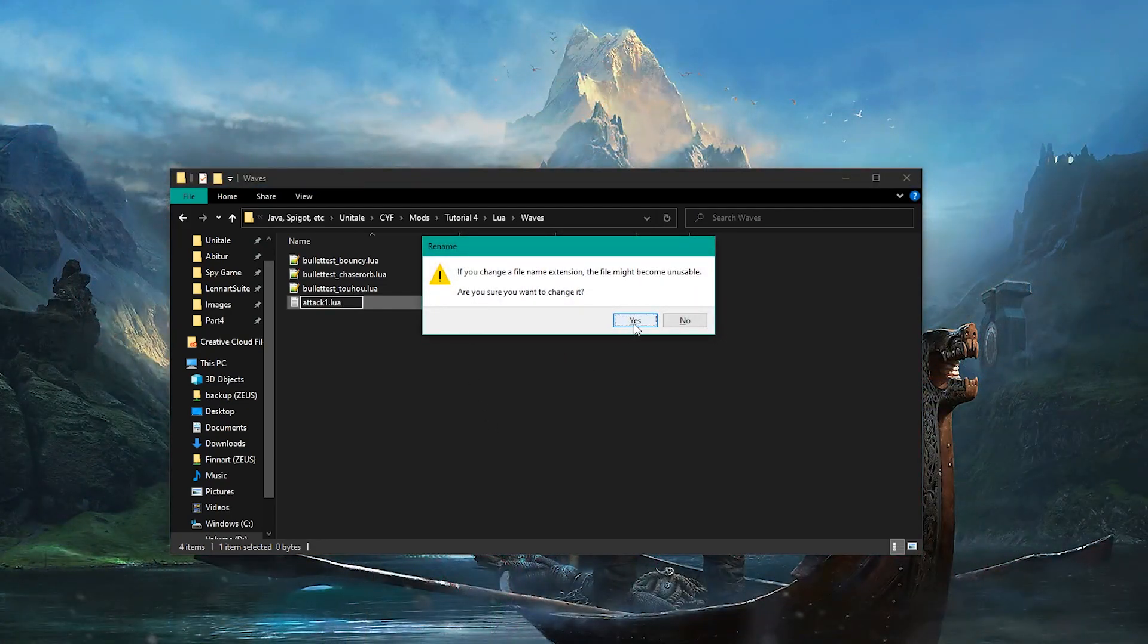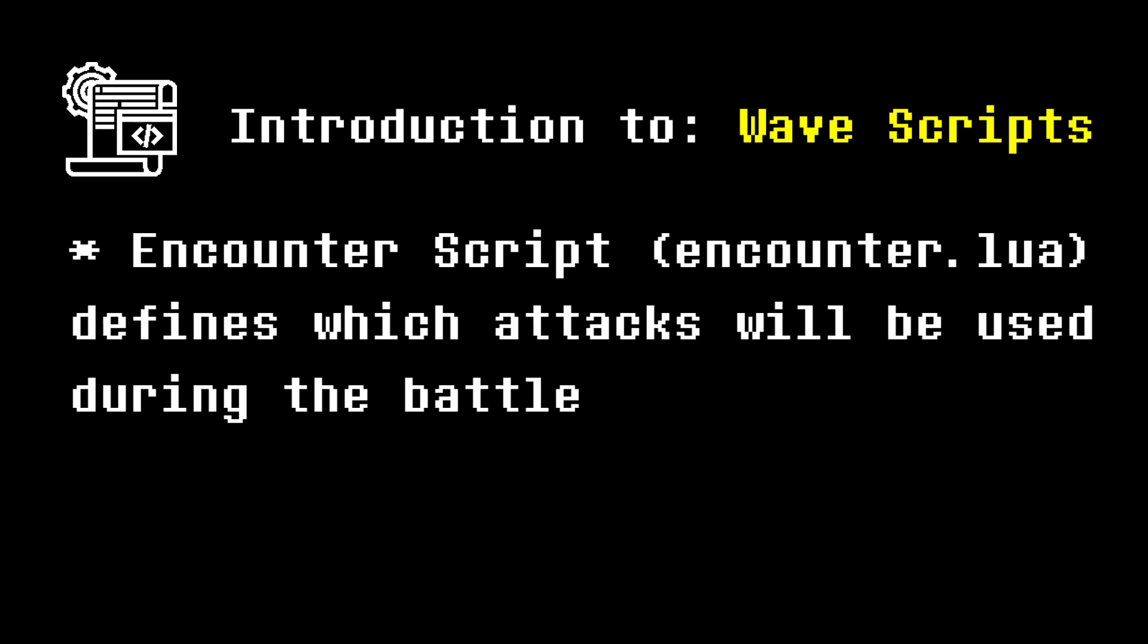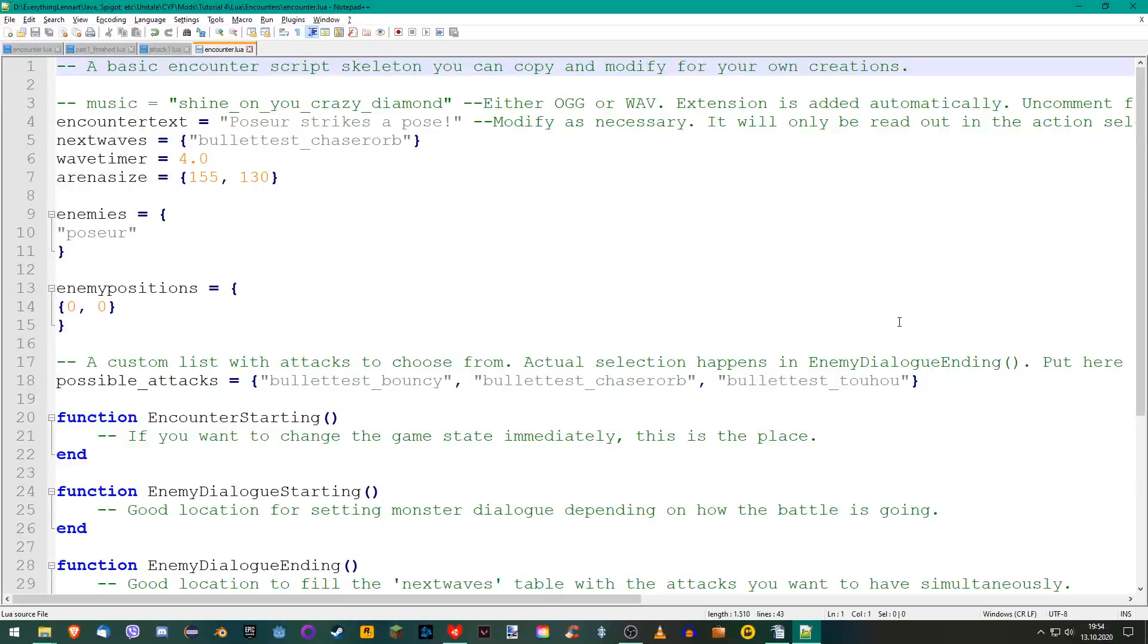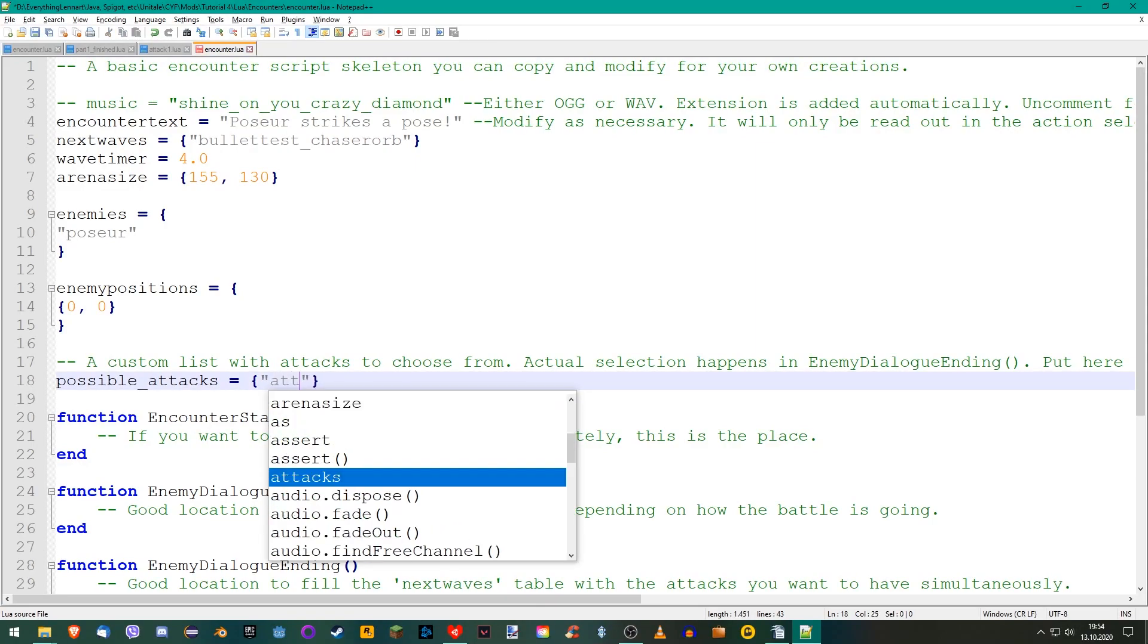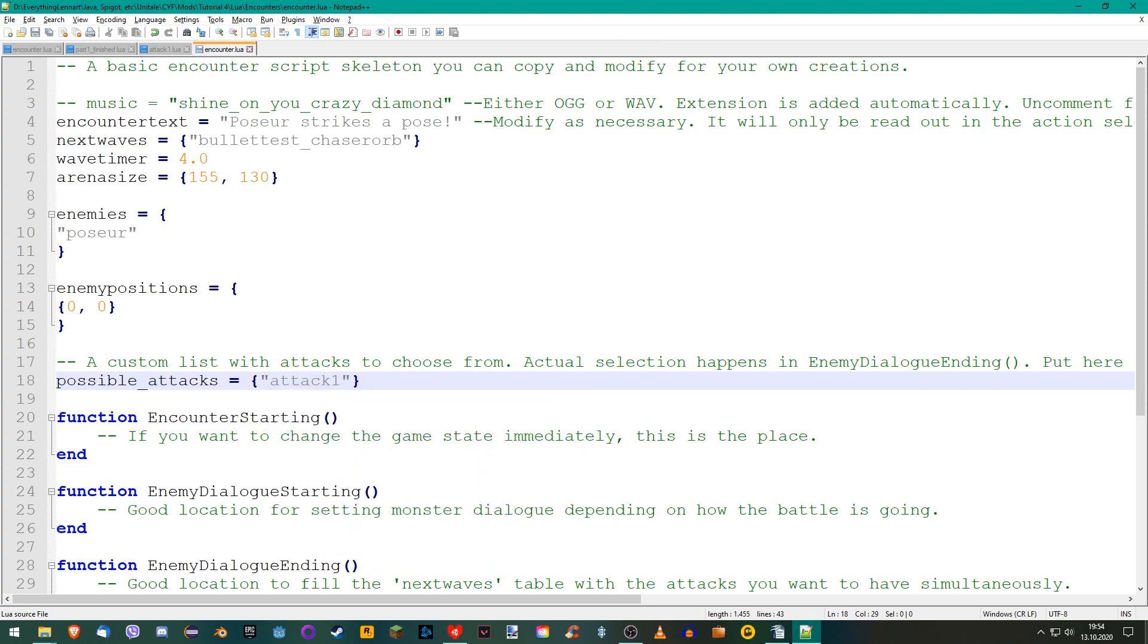Name the file attack1. Before we can actually see our wave in Unitale, we need to change our Encounter script so our newly created wave will be used as an attack. Open it and set the table possible_attacks to just attack1. This ensures that only our wave will be used as a possible attack, which is great for testing.